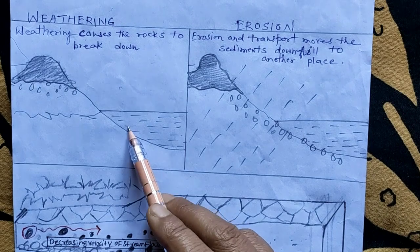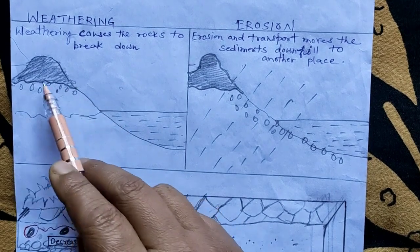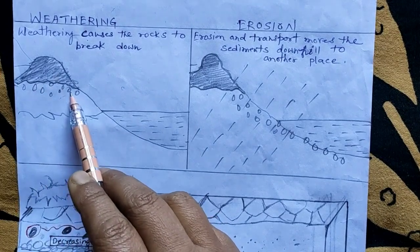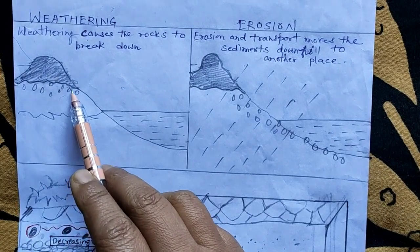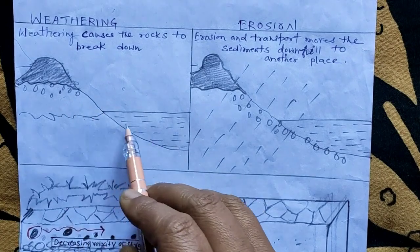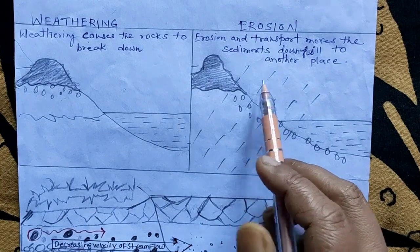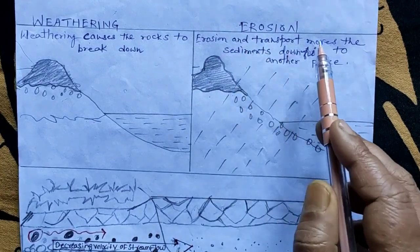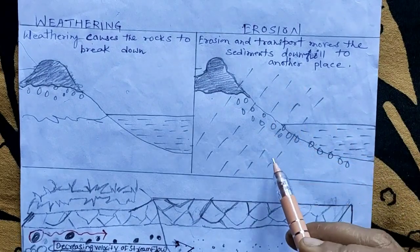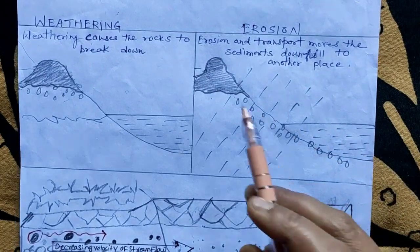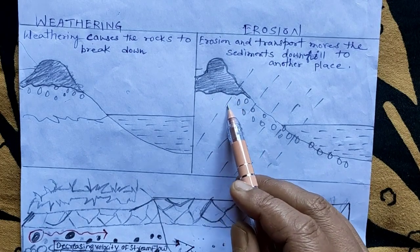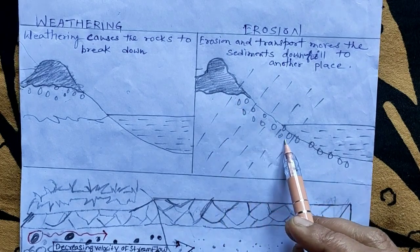With this picture I will explain weathering, erosion, and deposition. Weathering is the process that breaks down rocks into smaller pieces with the help of wind and water. Erosion moves the sediments downhill to another place — the rock particles which are broken get carried away by wind, water, and ice.